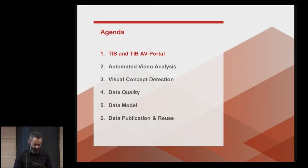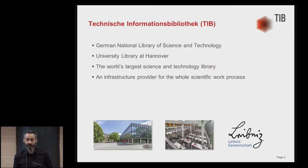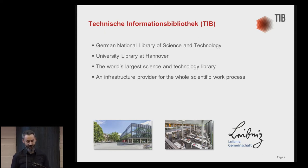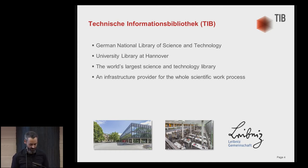Let's start with TIB — the Technische Informationsbibliothek, or in English, the German National Library of Science and Technology. We are not only the German National Library of Science and Technology but the University Library at Hannover as well. We are the world's largest science and technology library at the moment, and we see ourselves as an infrastructure provider for the whole scientific work process.